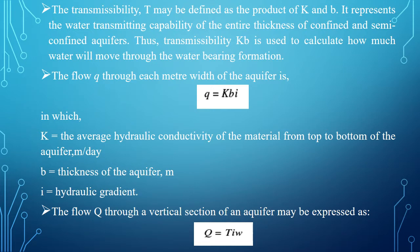Transmissibility represents the water transmitting capability of the entire thickness of the confined and semi-confined aquifers. The transmissibility, the product of K into B, is used to calculate how much water will move through the water bearing formation or aquifer.